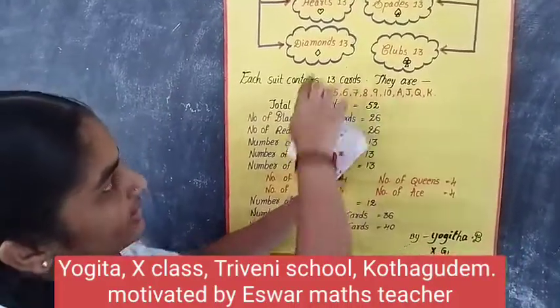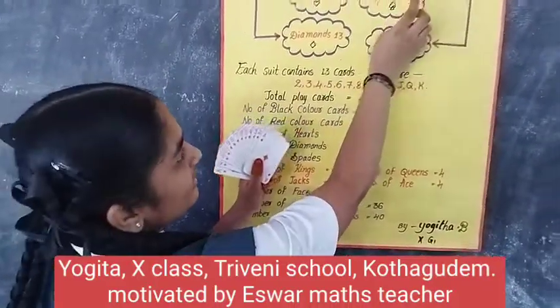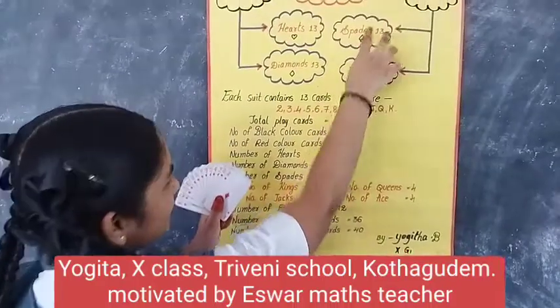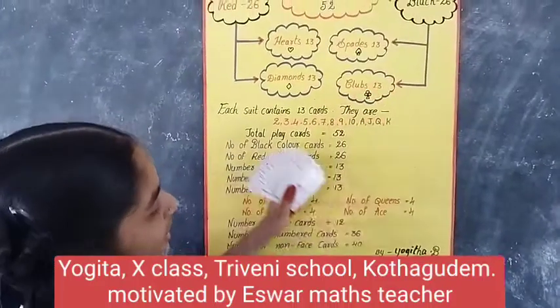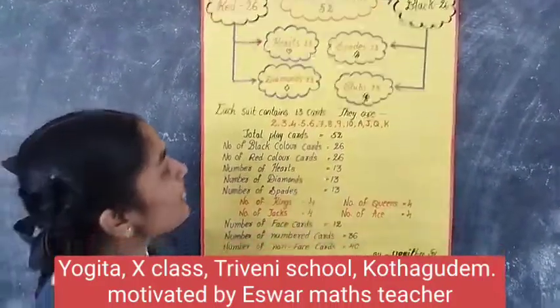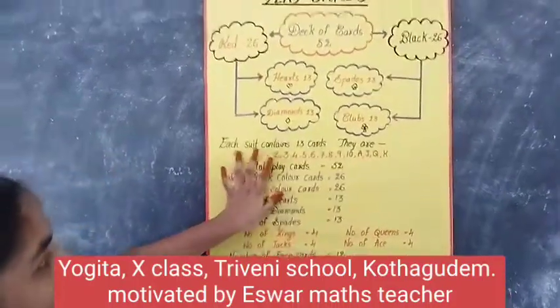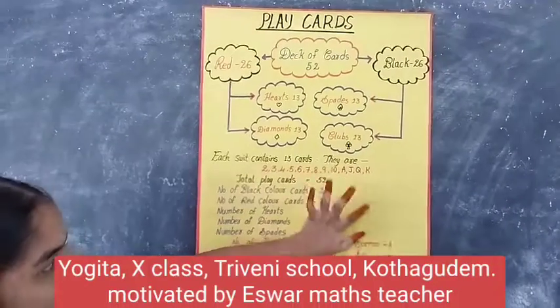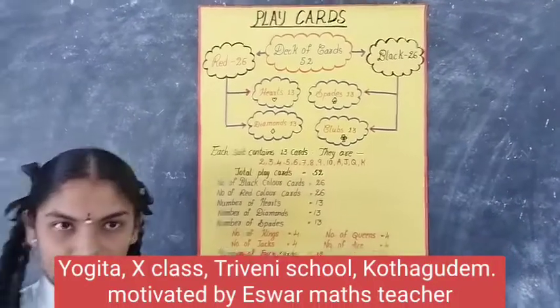See, these are diamonds. Like this, spades and clubs also have 13 cards each. So each suit contains 13 cards.